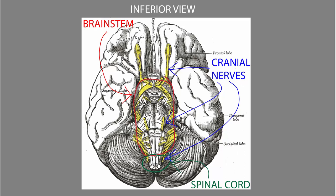Here we're looking at the brain from below in the inferior view, and the spinal cord is cut off here — you just see a little bit of it. Most of the cranial nerves are attached to the brain, except for one that is actually attached to the upper spinal cord. In particular, the area called the brainstem is where most of the cranial nerves are attached.